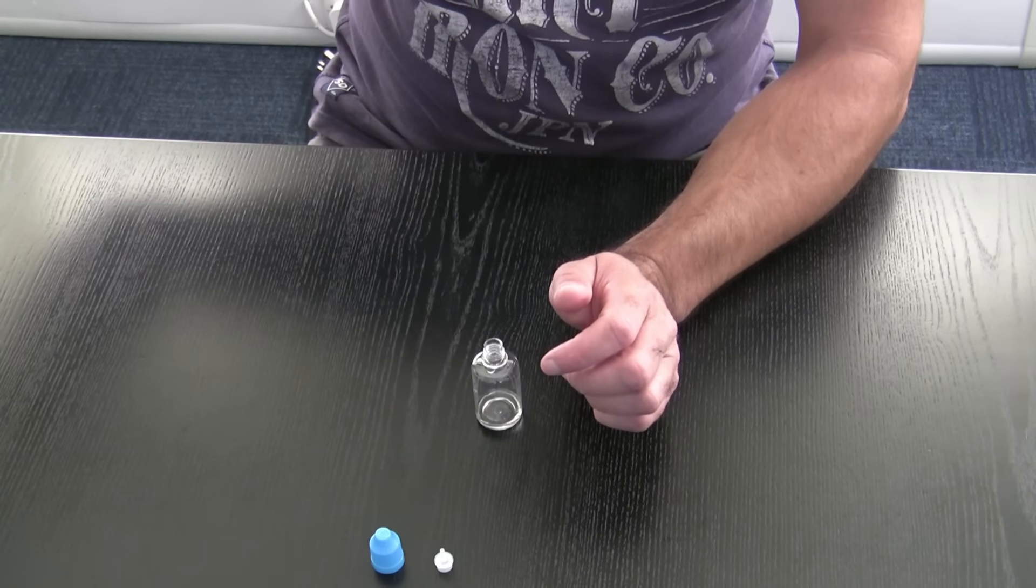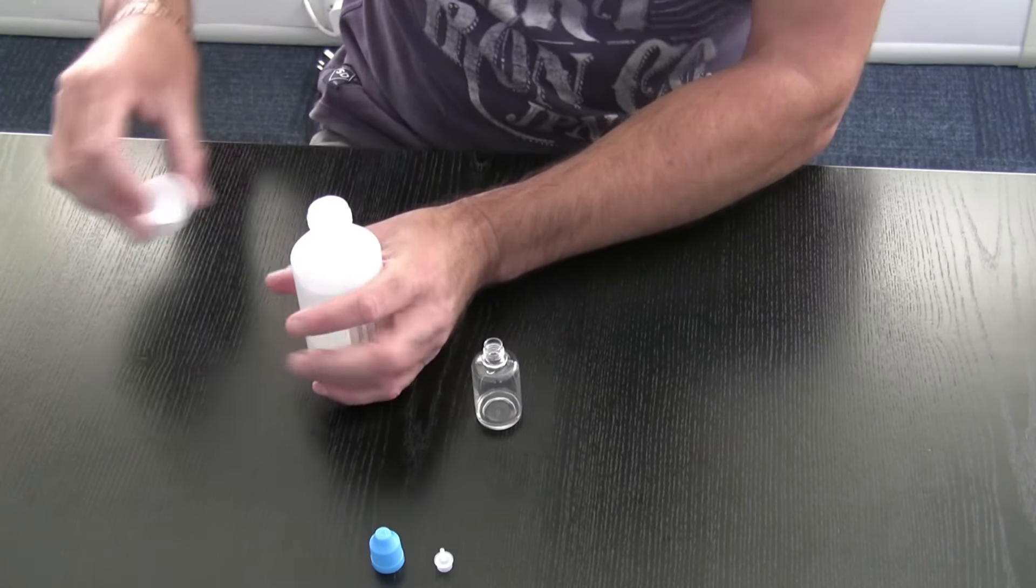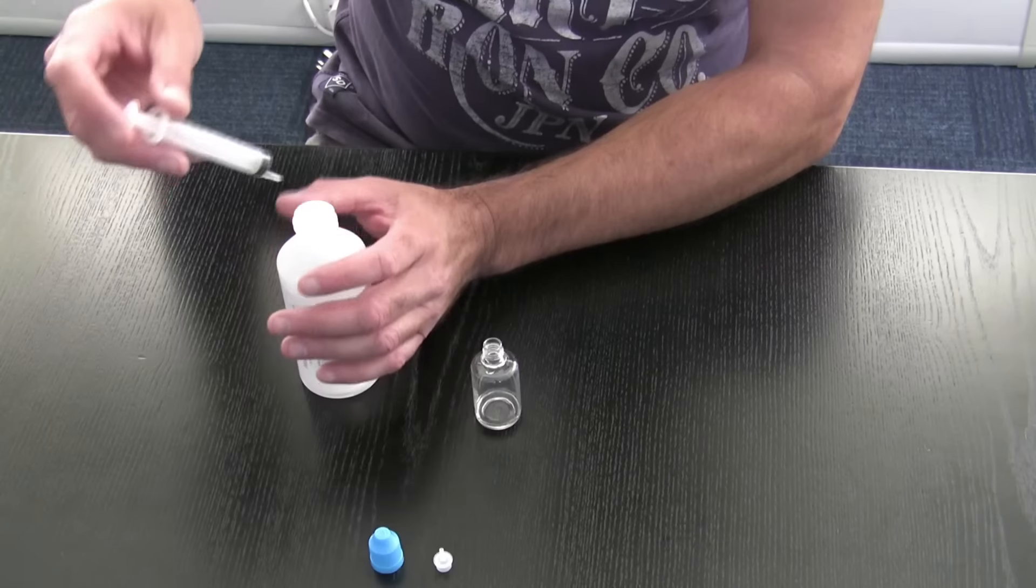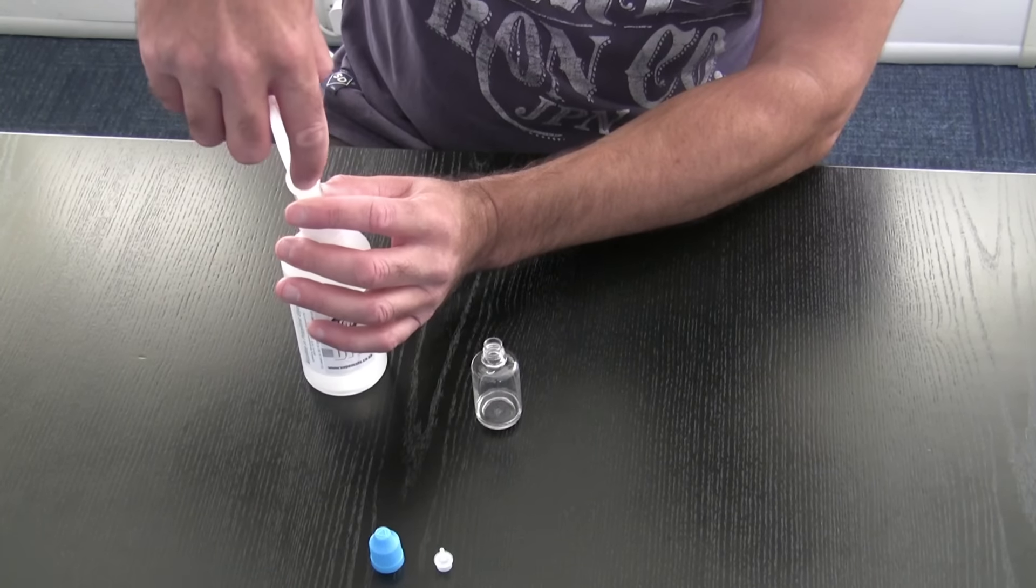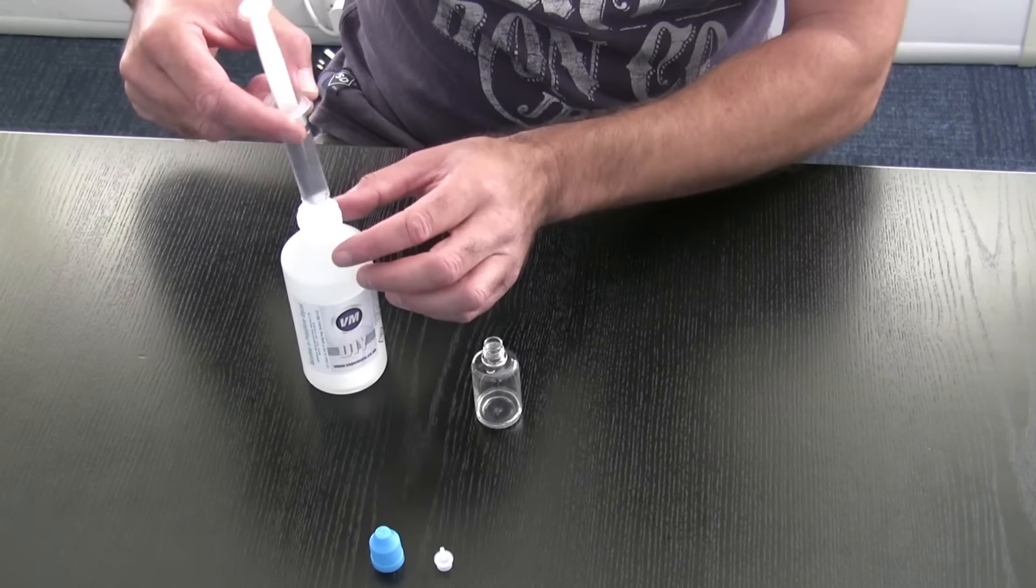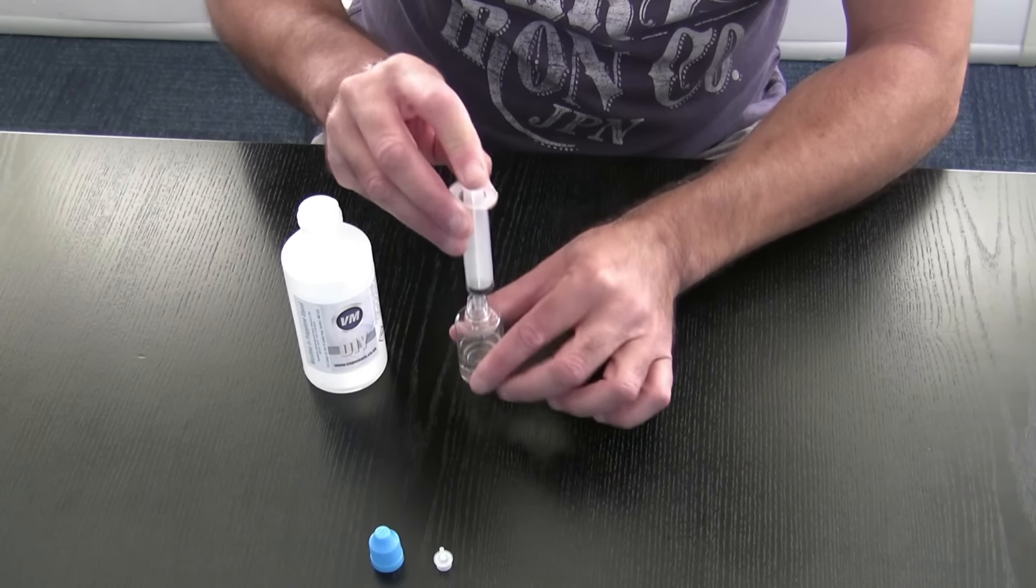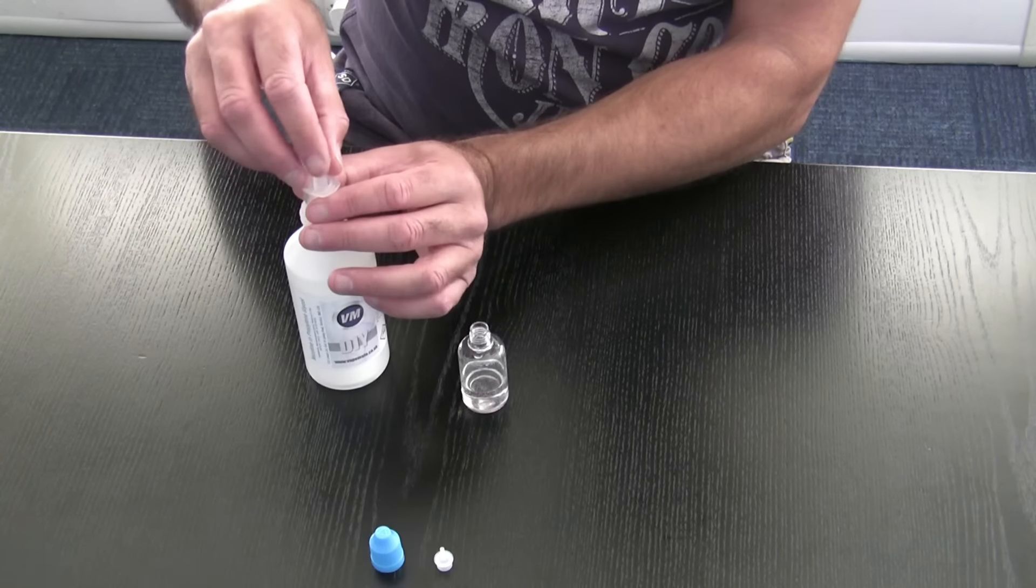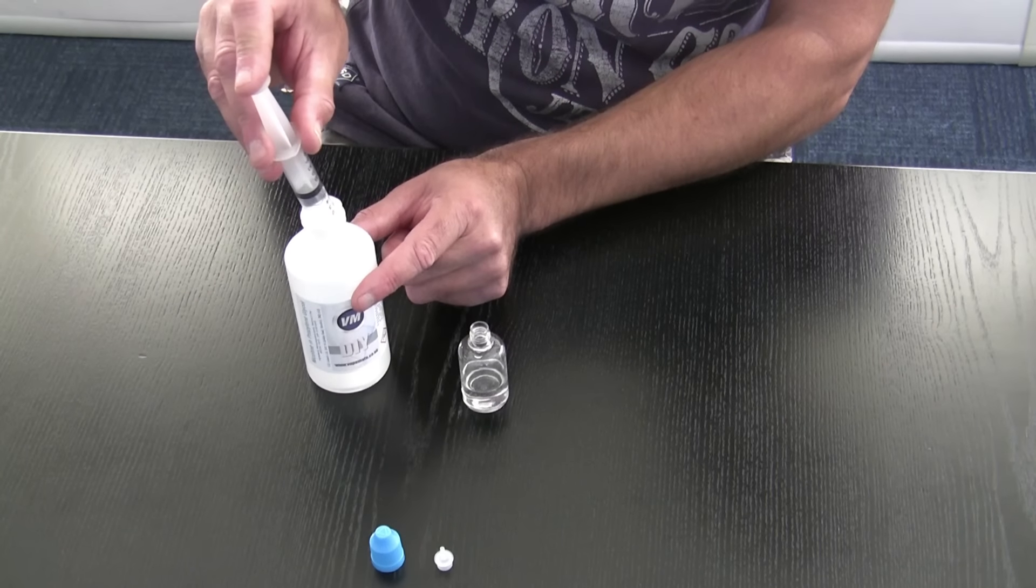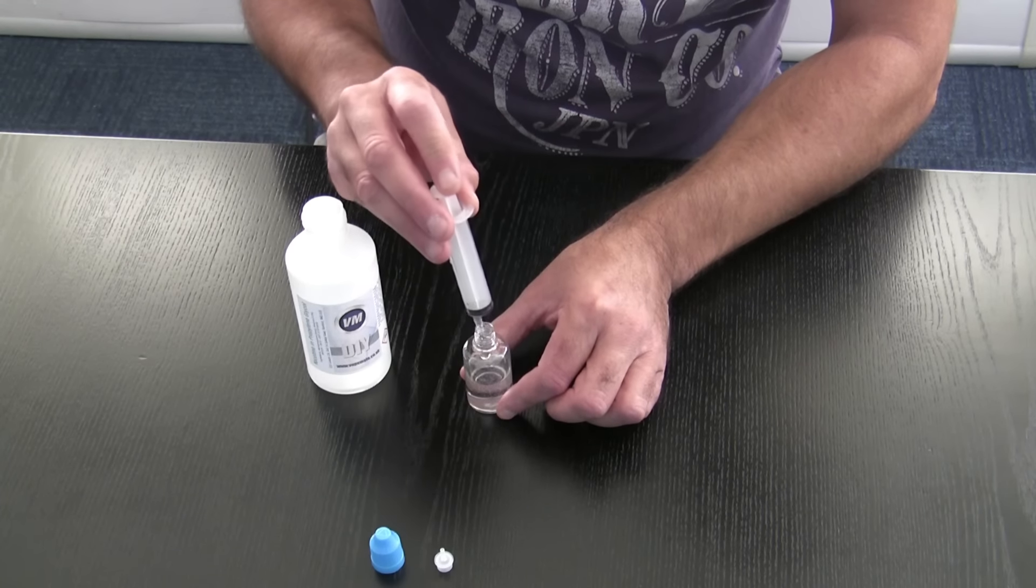Next one we're going to do is the PG. We need 15, 15 and a half mill of this one. We will get another syringe and pull up 15 and a half mill. We'll pull it up and squeeze a bit out until we get to where we're supposed to be. There it is, lovely.